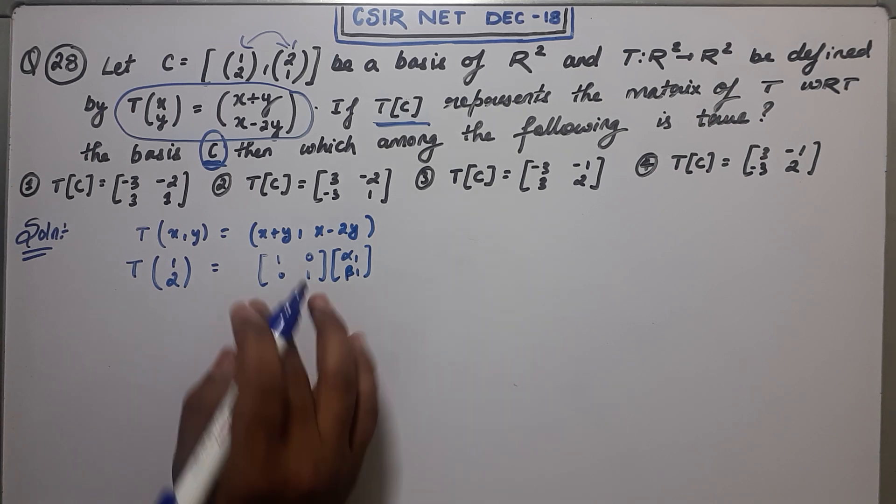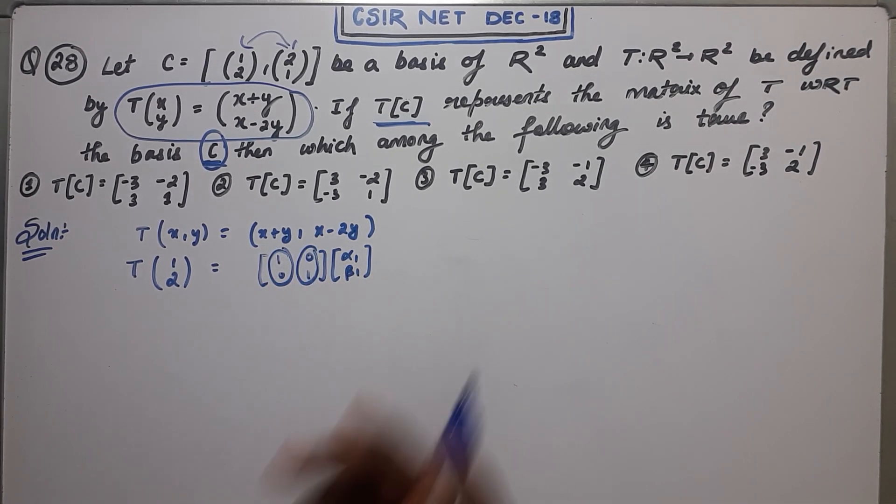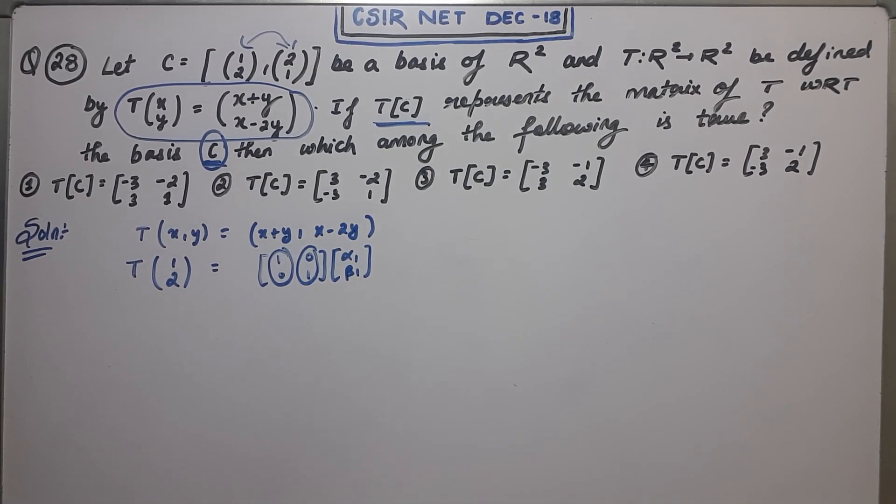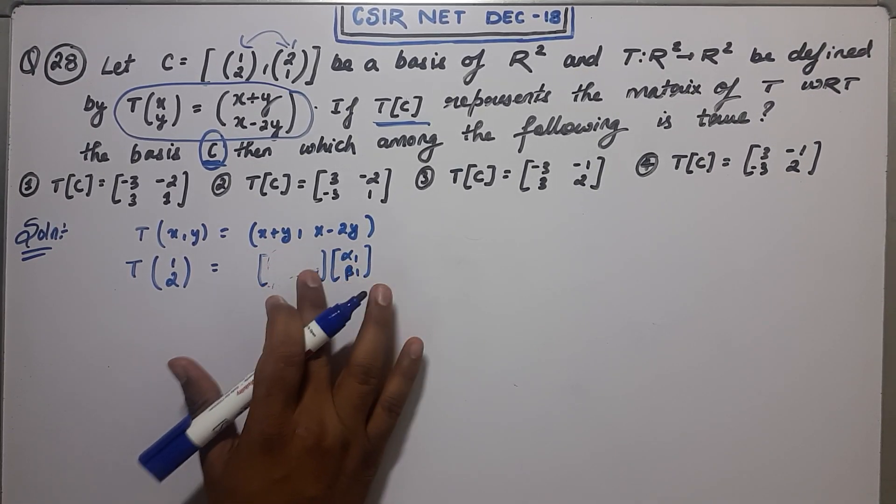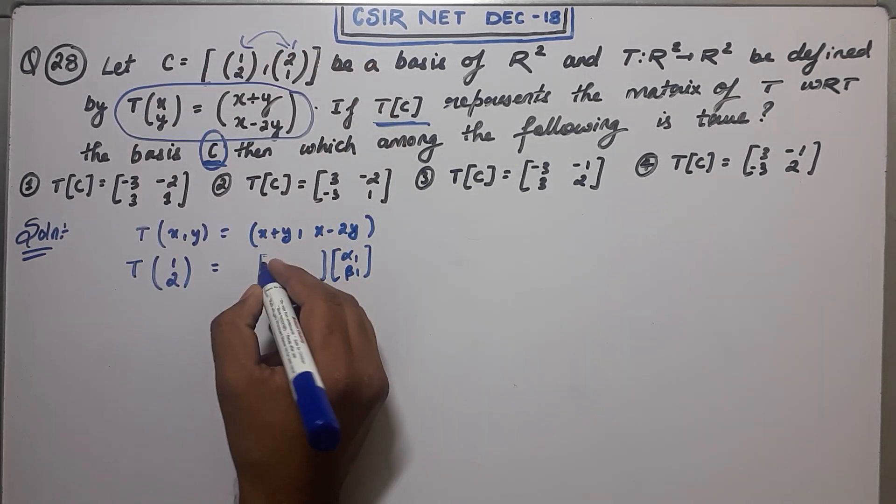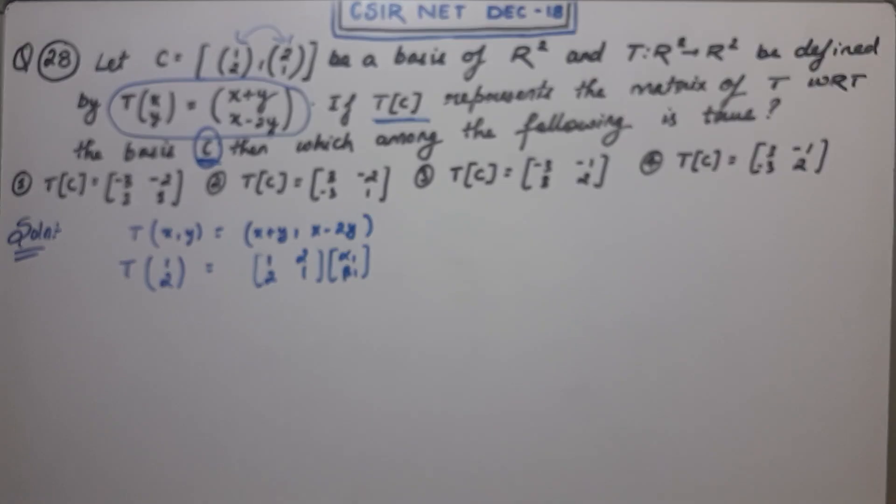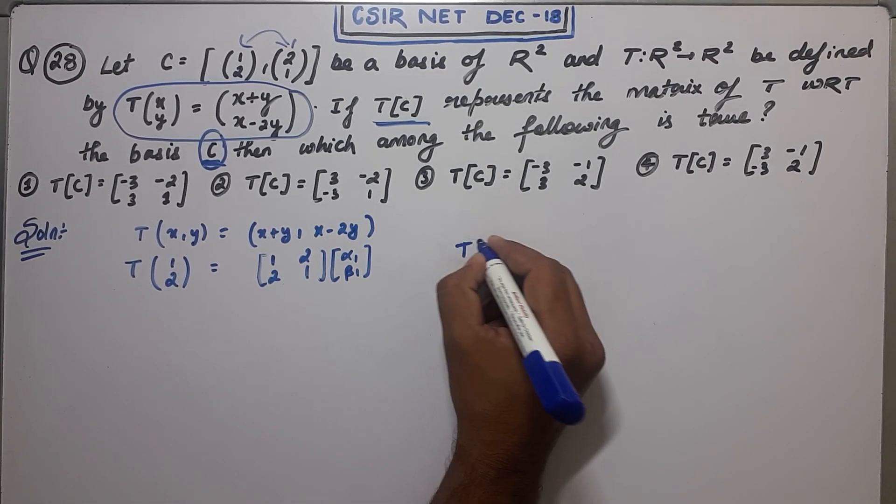What I am saying is that you are using the usual basis here. This is (1,0) and (0,1) of R squared. That's an important mistake that usually a student makes while doing this type of question. What you have to do is replace this by the basis that is given in the question. So you have to replace here (1,2) or (2,1). This is the basis that is given in the question. So you have to solve this system and this system.